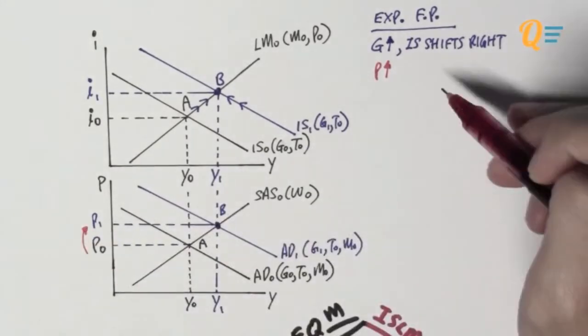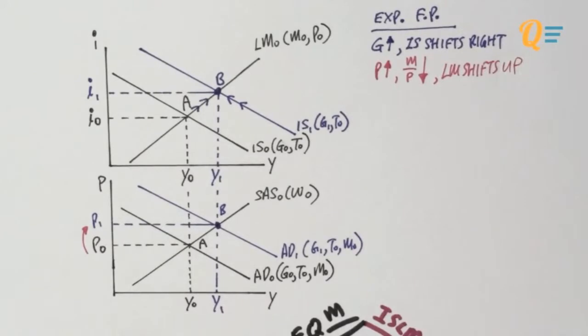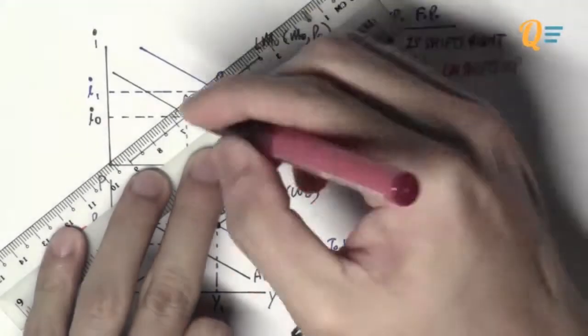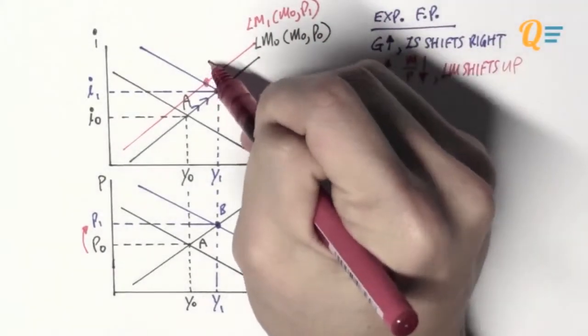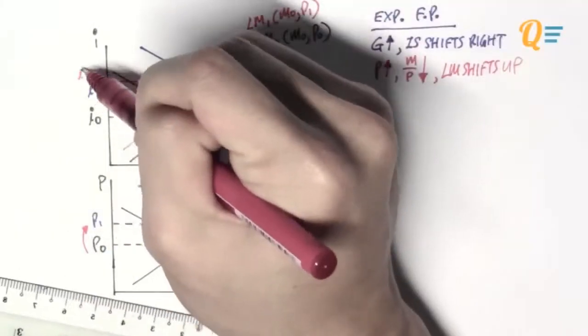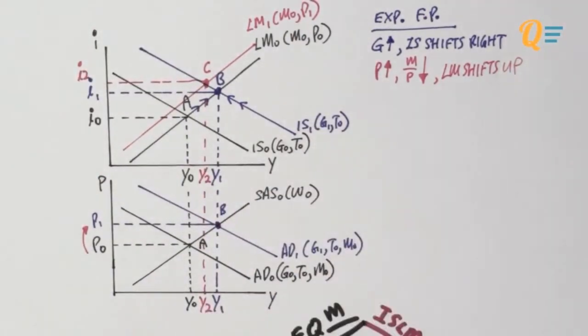But here's the thing, the price level has just increased, which means that the real money supply is going to fall, leading the LM curve to shift up. So there are going to be some implications in this. The LM curve is going to shift up to reflect the new price level, which gives us an equilibrium in the ISLM model of point C. And now the output level falls to Y2.